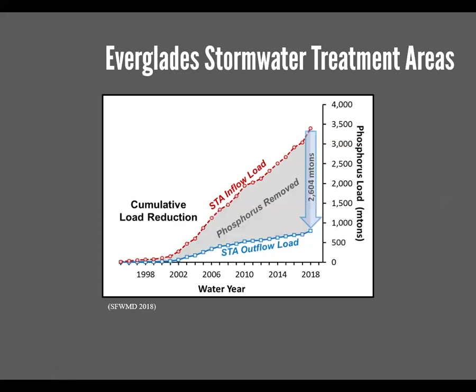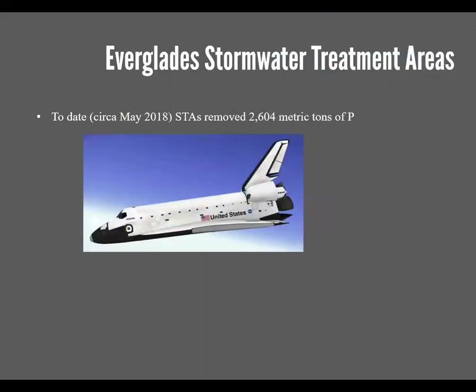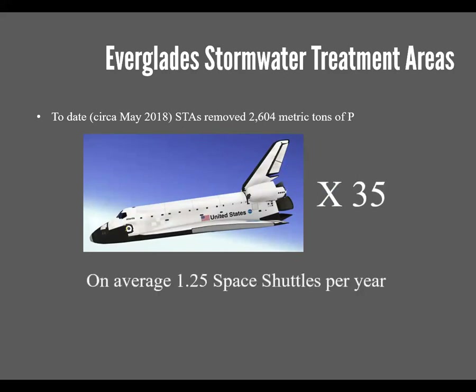Here's another way to look at the inflow versus outflow situation. The red line is inflow load, the blue line is outflow load, and you can see that gap widening significantly. To date, 2,604 metric tons of phosphorus has been retained within these STAs. To put that into context — because it's Florida and we have a space industry here — that equates to about 35 space shuttles, or about one and a quarter space shuttles per year since STAs began operating. That's a lot of phosphorus when you think about it in terms of space shuttles.